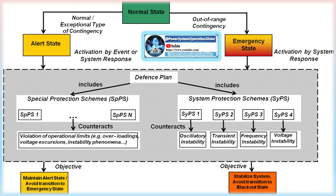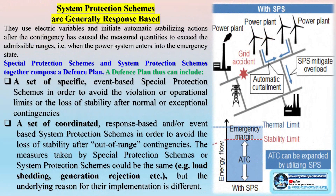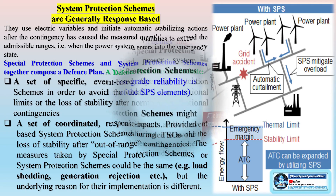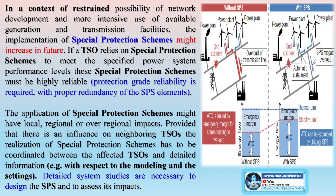Special protection schemes are often event-based and counteract a limited number of critical contingencies identified beforehand, e.g., through offline studies. Event-based means the special protection scheme is designed for operation only upon recognition of a particular combination of events, based on direct detection of the event, e.g., loss of a line. It anticipates unacceptable system conditions resulting from normal or exceptional contingencies and aims to stabilize the system in the alert state by means of dedicated automatic controls. Selected system quantities can also be monitored to trigger the scheme response-based; the power system is not necessarily in an emergency state, though there might be a risk of entering it.